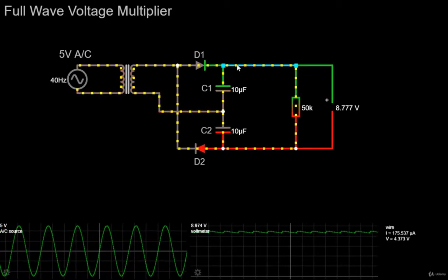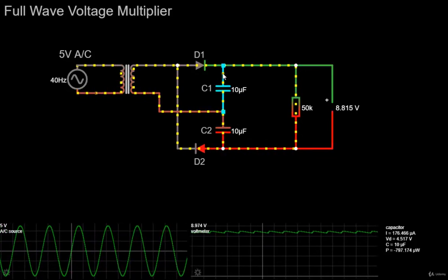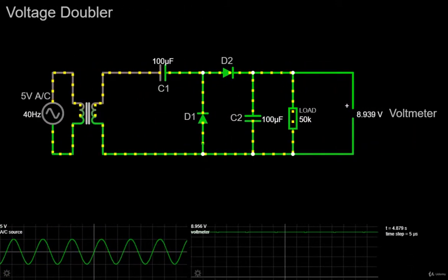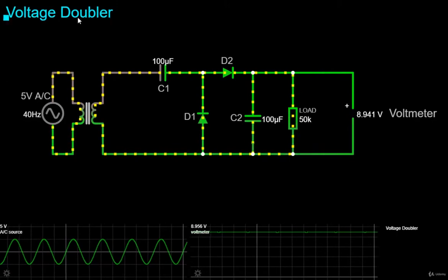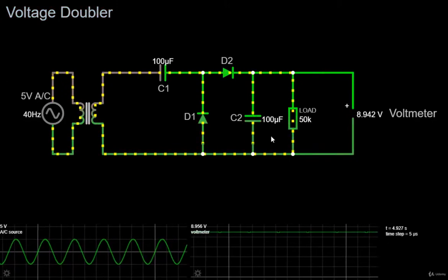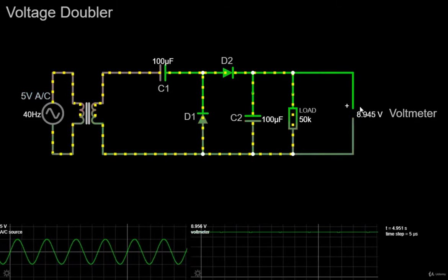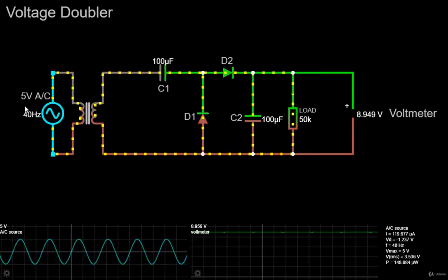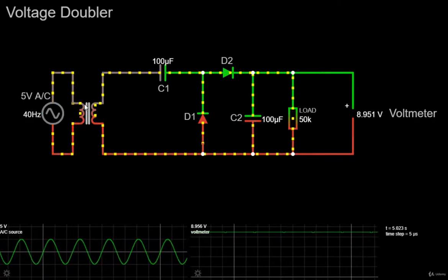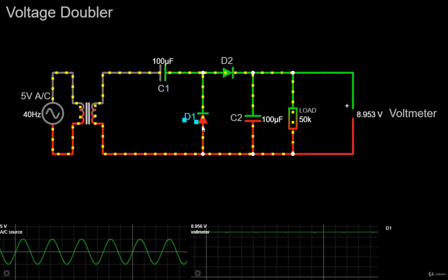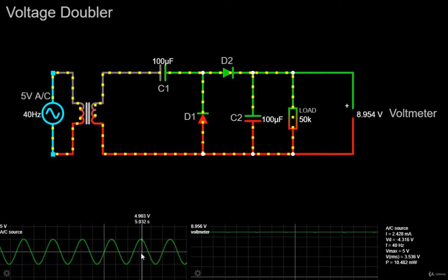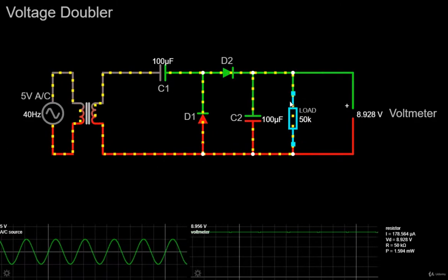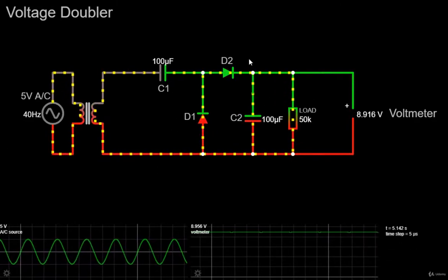Now that we understand how a full-wave voltage multiplier works, let's see another circuit which is called voltage doubler. As its name suggests, a voltage doubler is a voltage multiplier circuit which has a voltage multiplication factor of 2. The circuit consists of only two diodes, two capacitors, and an oscillating AC input voltage. This simple diode capacitor pump circuit gives a DC output voltage equal to the peak-to-peak value of the sinusoidal input. In other words, double the peak voltage value because the diodes and the capacitors work together to effectively double the voltage.